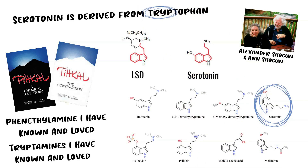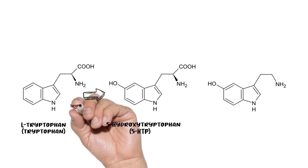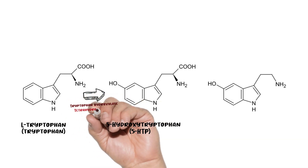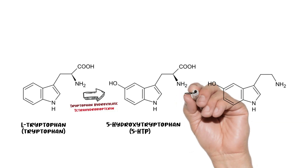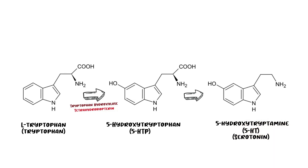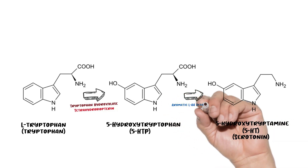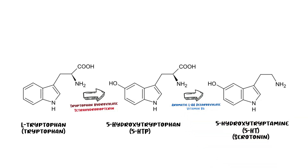Now let's talk about how serotonin is synthesized from tryptophan. Tryptophan is converted to 5-hydroxytryptophan through the enzyme tryptophan hydroxylase, with tetrahydrobiopterin as the cofactor. Then 5-hydroxytryptophan is converted to 5-hydroxytryptamine (serotonin) through aromatic amino acid decarboxylase, with vitamin B6 as the cofactor.